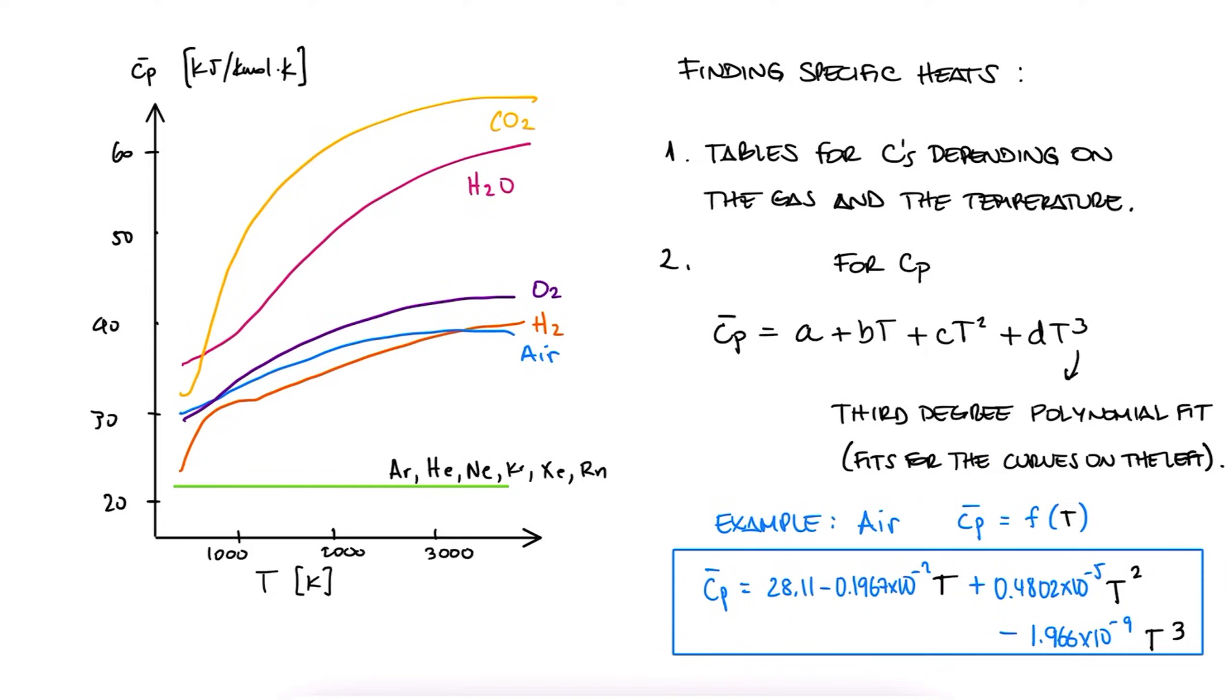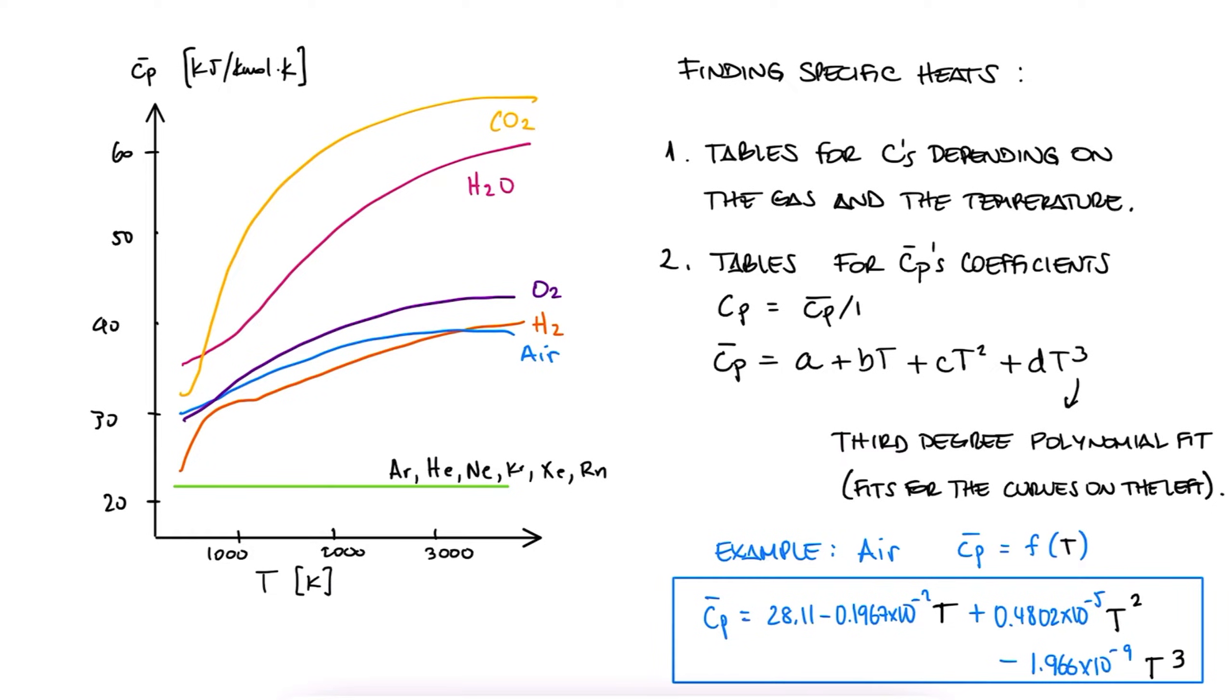Quick parenthesis here, remember that the bar on top of any property is the molar specific value, so if you want Cp, you can find it by dividing Cp bar by molar mass. Regardless of the method, finding Cp is obviously extremely helpful,